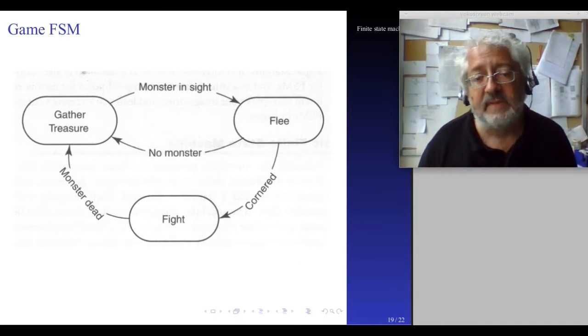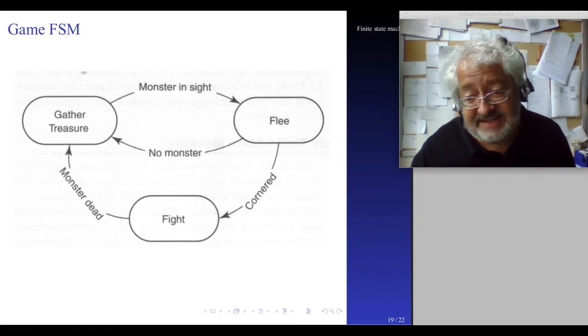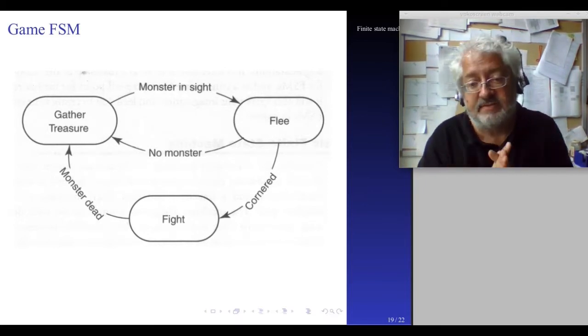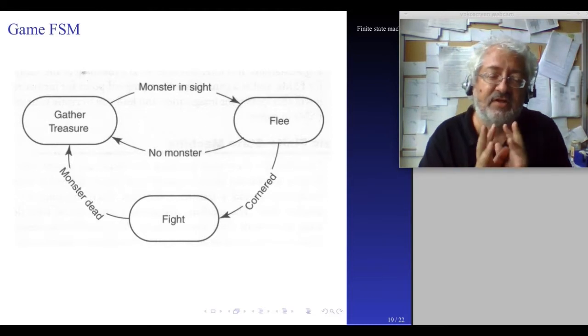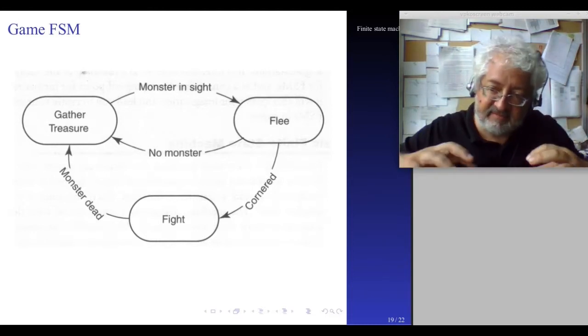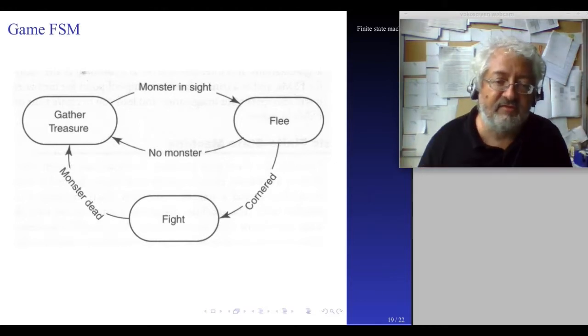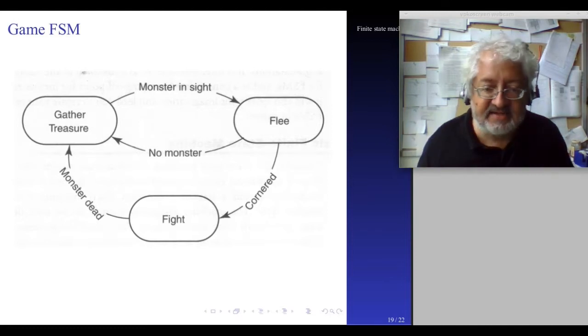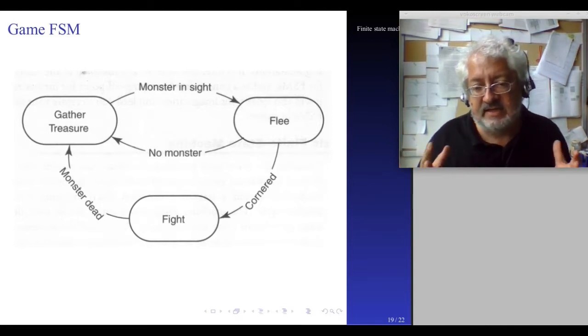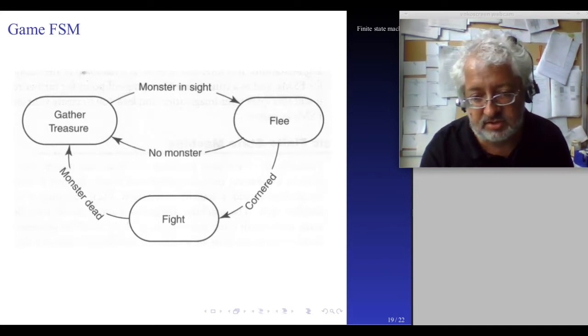Now, if while he's fleeing, he's cornered by the monster. He doesn't flee successfully, but the monster catches him. He's cornered. Then he has to fight. So now we go into a fight, which the whole fight can be another finite state machine. It can expand into a whole set of 200 different fighting states. And then at some point the monster is dead, and then he can go back to gathering treasure. This is how many computer games actually work by implementing such finite state machines.